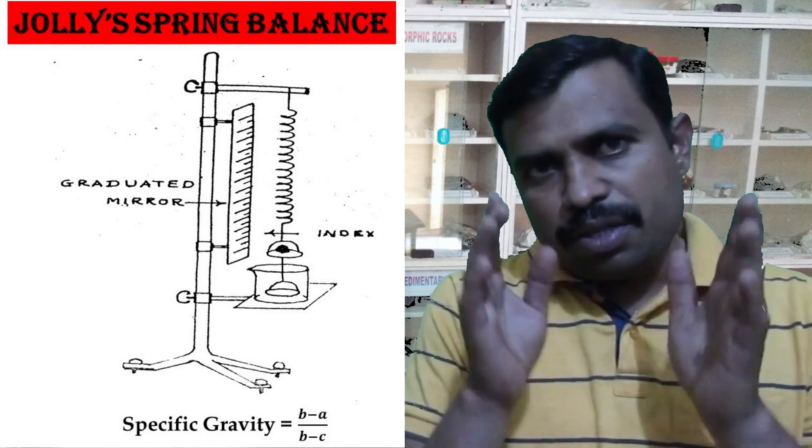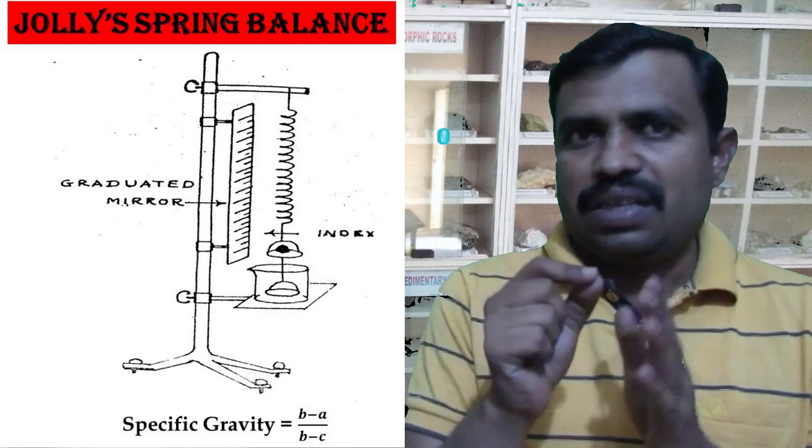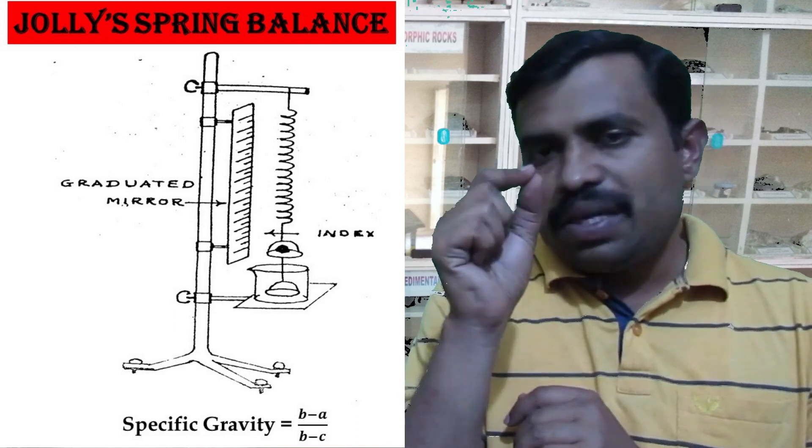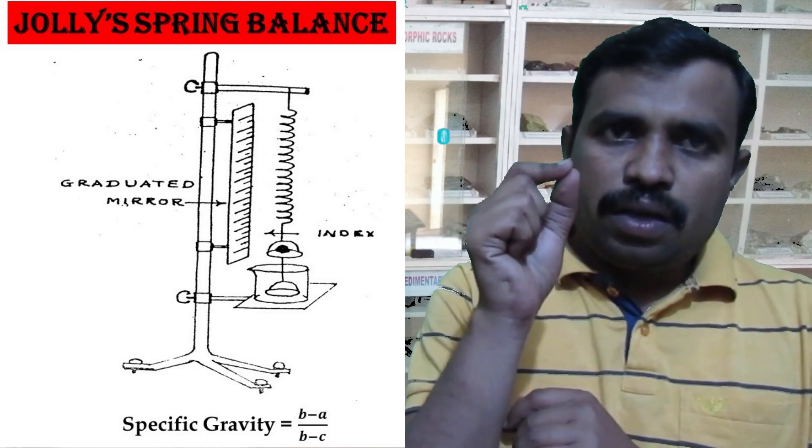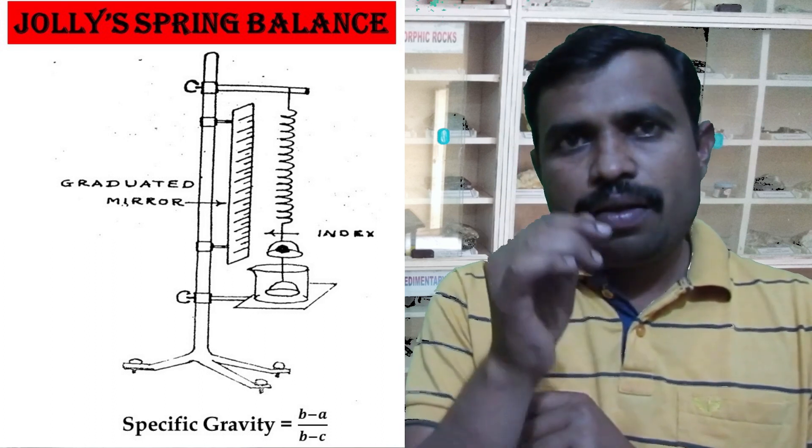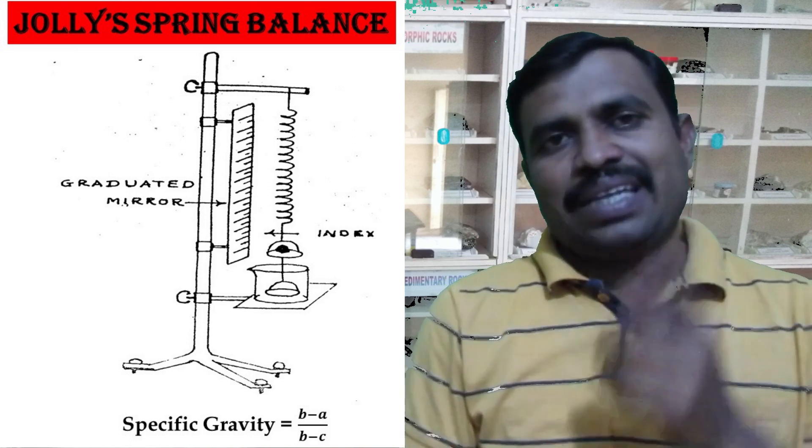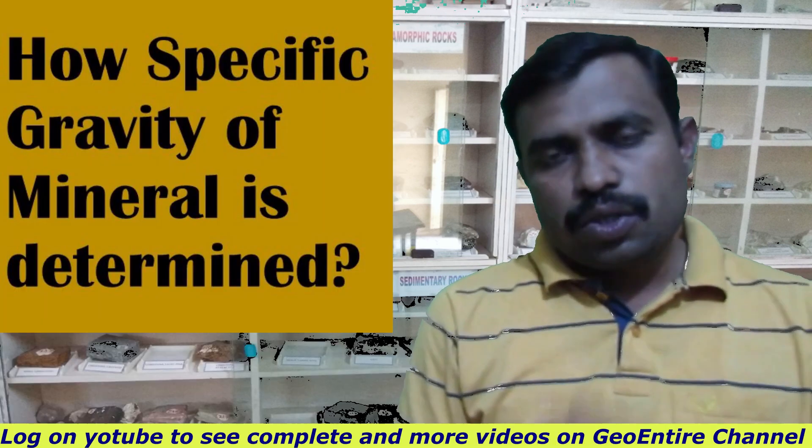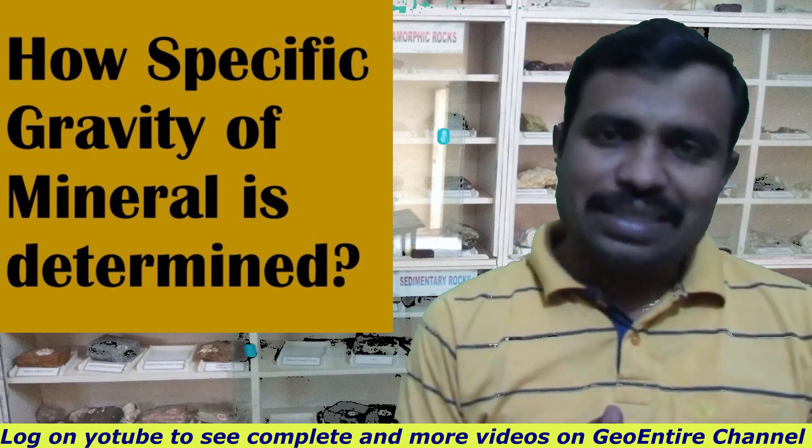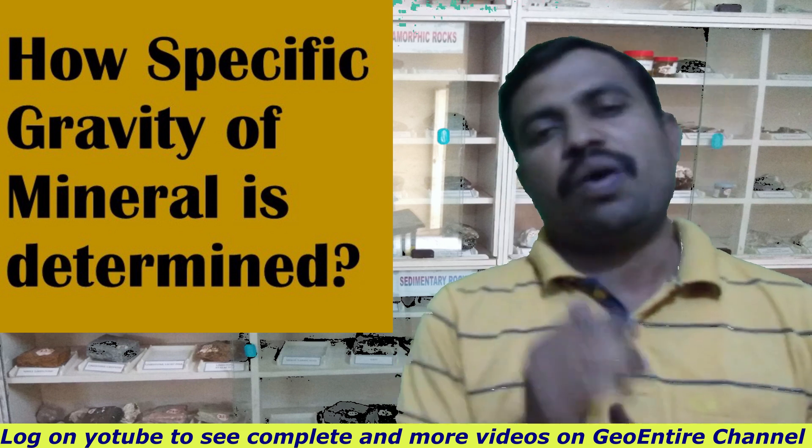The specific gravity of the mineral is determined according to the equation: specific gravity is equal to B minus A divided by B minus C. When we calculate this, we will get the specific gravity.